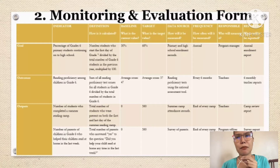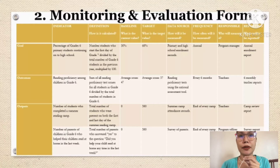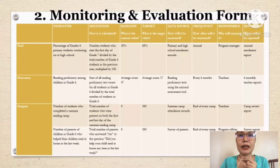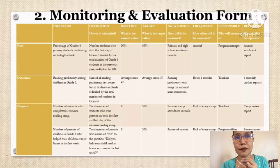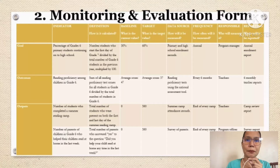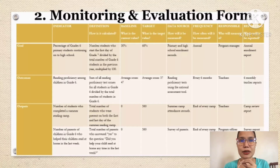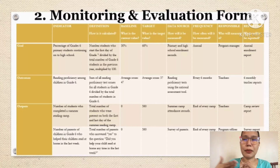So how is it calculated? The number of students who start the first day of Grade 7 divided by the total number of Grade 6 students in the previous year, multiplied by 100. So yung baseline is 50%. Sum of all the reading proficiency test scores for all students in Grade 6 divided by the total number of students in Grade 6 — so what's the average score? 47. Total number of students present on both first and last days of the summer reading camp — wala. And then total number of parents who answered yes to the question 'Did you help your child read at home anytime in the last week?' — wala din, walang parent na nag-help out to make their children proficient in reading.